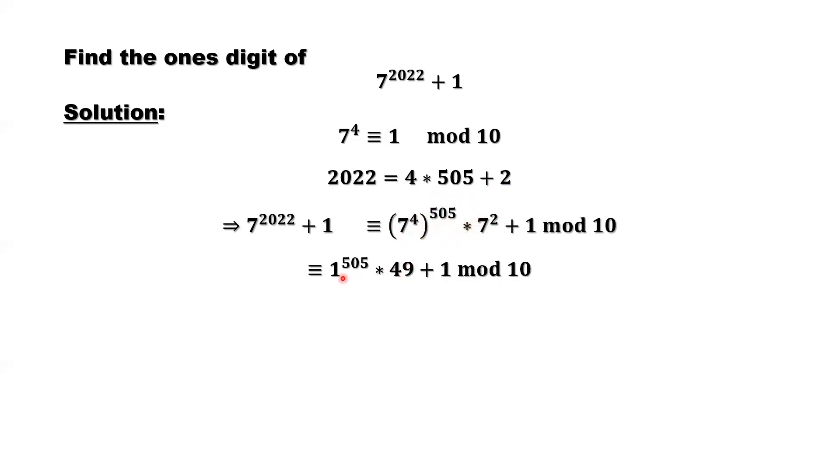So whatever outside the power is, this is always 1. So this is 1, then times 7 times 7 is 49. 49 here times 1 is 49, plus 1 is 50. So 50, what is the ones digit for 50?